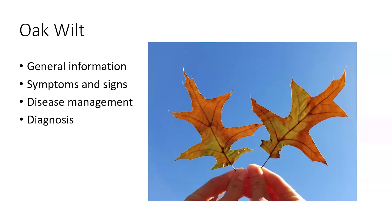Today we're going to talk about two diseases of oak — two very important diseases. One is called oak wilt, the other is called bacterial leaf scorch. I'm sure many of you have already heard about those two diseases. I will go through the general information, symptoms and signs, disease management, and how to make a diagnosis.